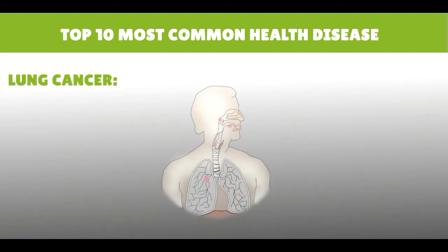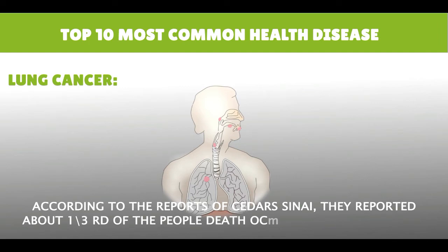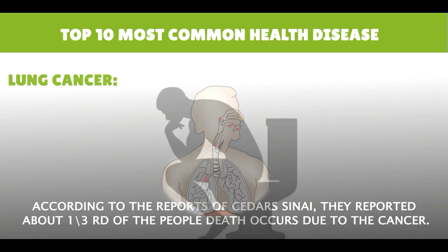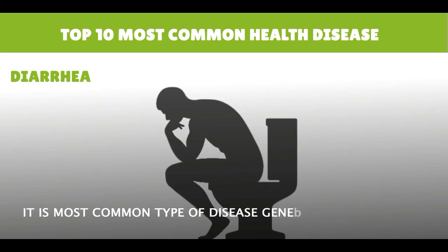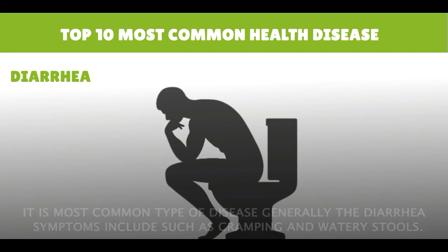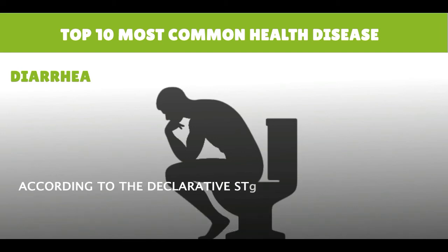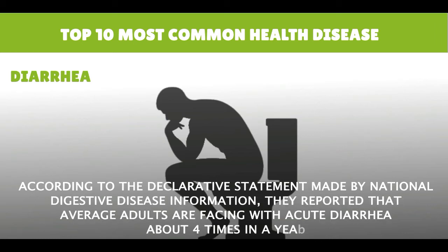Lung Cancer. According to reports from Cedars-Sinai, about one-third of all people deaths occur due to cancer. Diarrhea is a very common type of disease; its symptoms generally include cramping and watery stools. According to the National Digestive Disease Information Center, the average adult faces acute diarrhea about four times a year.